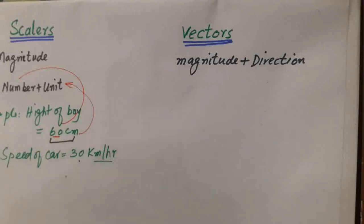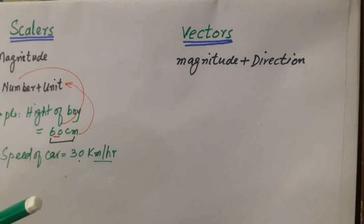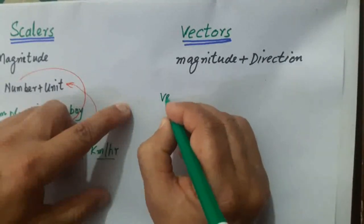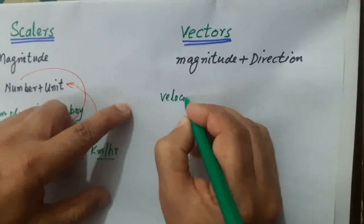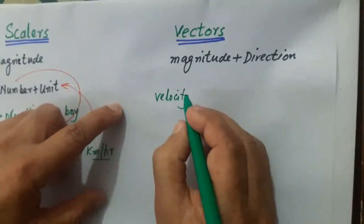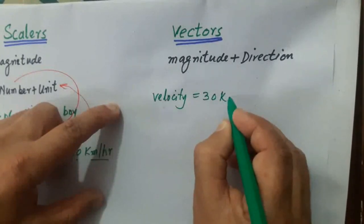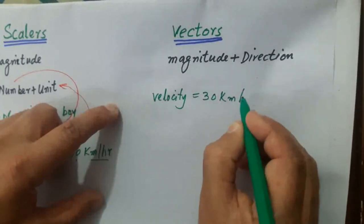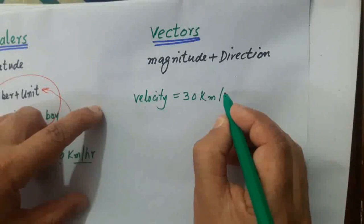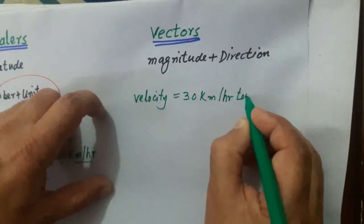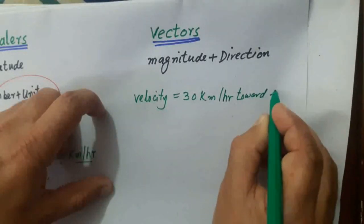Vectors require direction. For example, the velocity of a car is 30 km per hour. The velocity of a car is 30 km per hour — that includes both magnitude and direction.